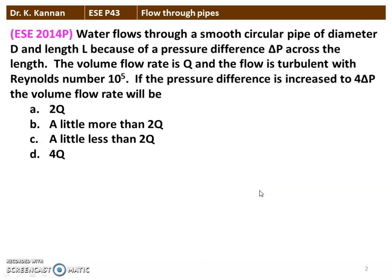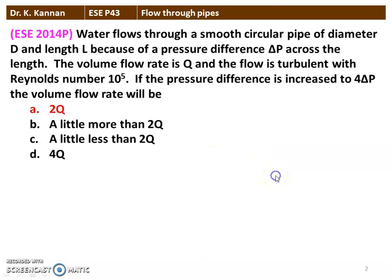The first question is from the 2014 question paper. Water flows through a smooth circular pipe of diameter D and length L. Because of the pressure difference delta P across the length, the volume flow rate is Q and the flow is turbulent with Reynolds number 10 to the power 5. If the pressure difference is increased to 4 times delta P, the volume flow rate will be — the correct answer is 2Q. When the pressure difference is increased to 4 times delta P, the discharge will increase 2 times.